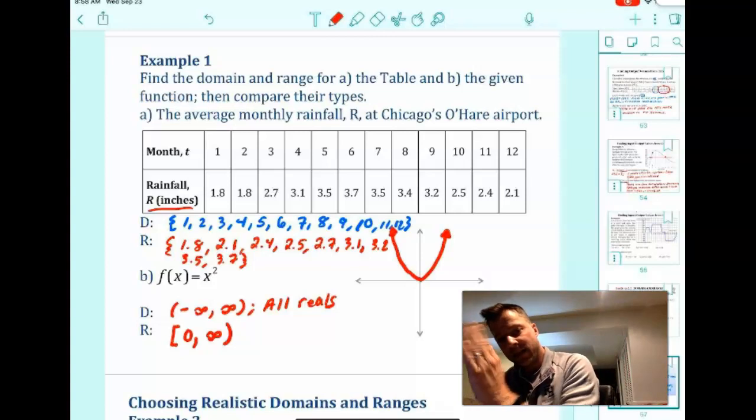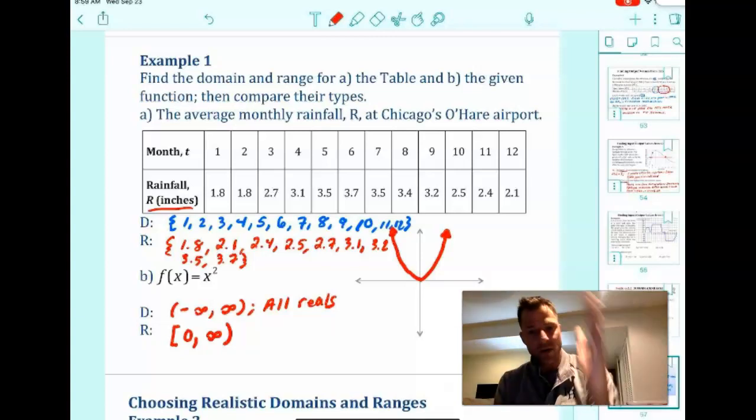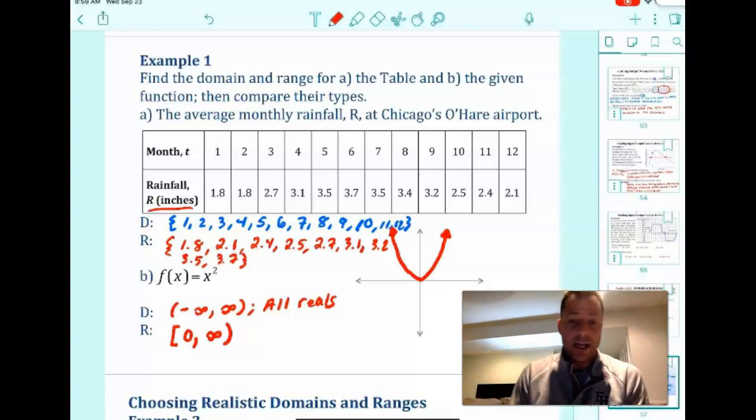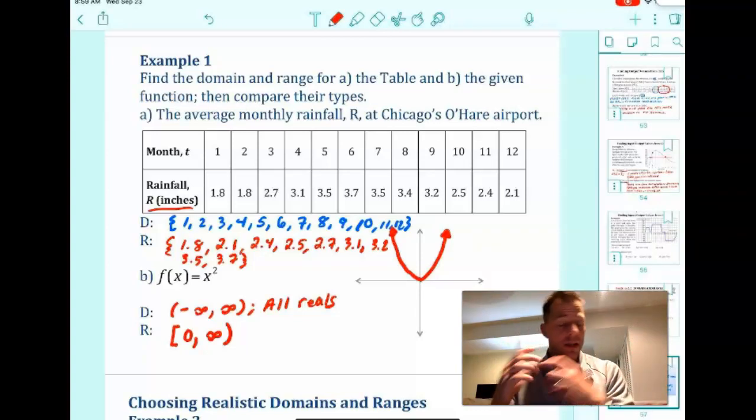And from a graph, you have to be able to read the graph. Remember, domain, read it from left to right, and then bottom to top, right? And always go from smallest number to largest. And remember, with domain and range, you can use brackets here, unlike when we talk about increasing and decreasing. Those are between, and we always use parentheses.